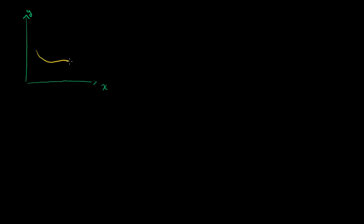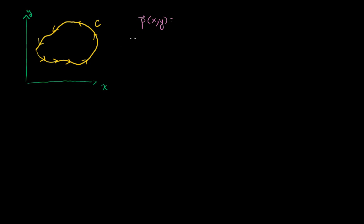Let's say we have a path in the xy-plane — that's my y-axis, that is my x-axis — and my path will look something like this, going in a counterclockwise direction. We'll call this counterclockwise path C. Let's say we also have a vector field, and our vector field is going to be a little unusual. I'll call it P. P of xy has only an i-component: it equals capital P of xy times the unit vector i, with no j component.